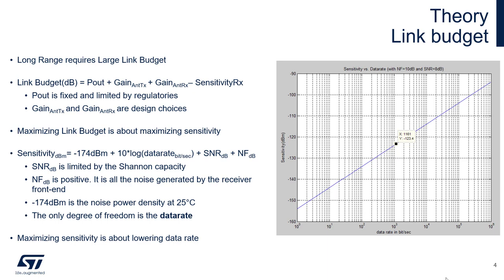The ingredients that influence receiver sensitivity are: background noise power, 10 times the decimal logarithm of data rate in bits per second, signal-to-noise ratio, and the noise factor of the receiver itself. Signal-to-noise ratio is limited by channel capacity — fixed. Noise floor is defined by hardware design — fixed. Background noise is fixed; we cannot change physics. So the only degree of freedom is the data rate. We can maximize sensitivity by lowering the data rate. That is the cost of achieving large communication distance.